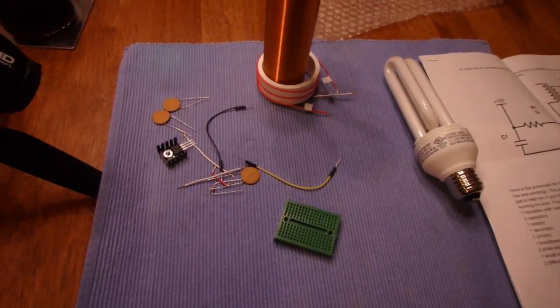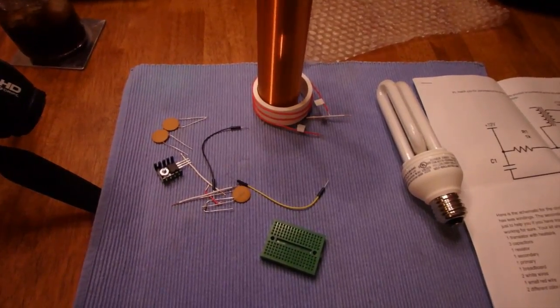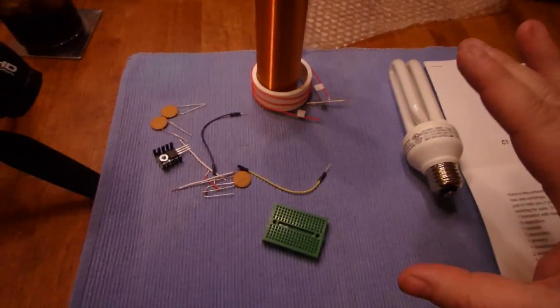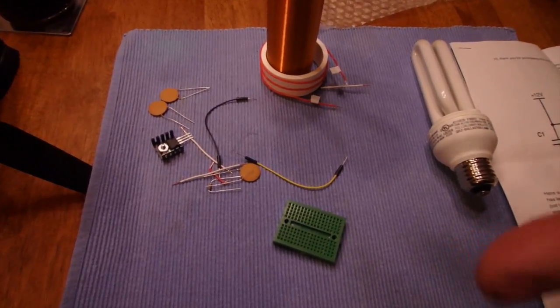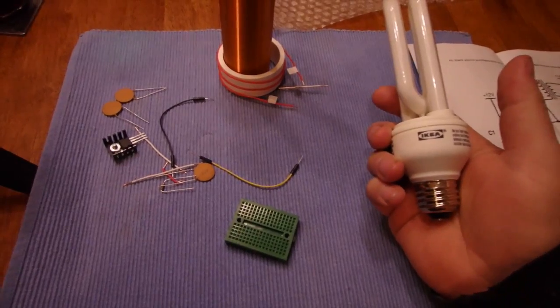Now if you don't know what a Tesla coil is, it's basically an experimentation for wireless power. According to the instructions, once I have the Tesla coil built, connected to a 9-volt power source, this fluorescent light will light up.